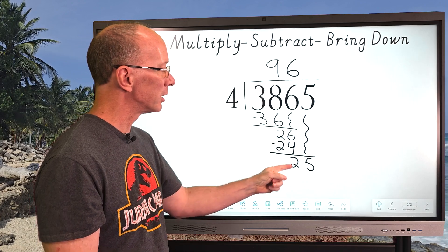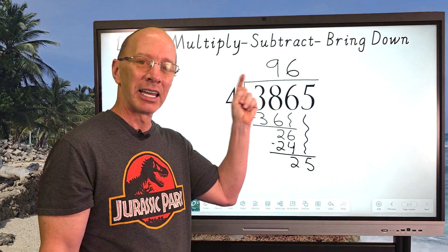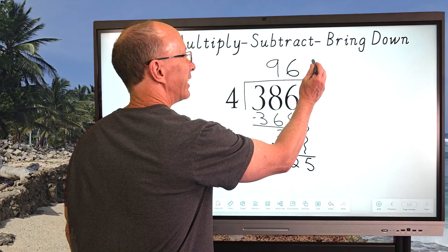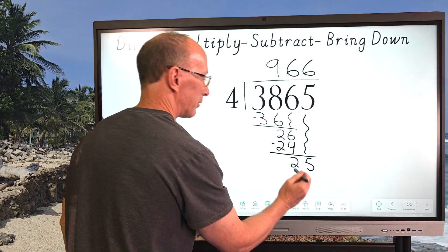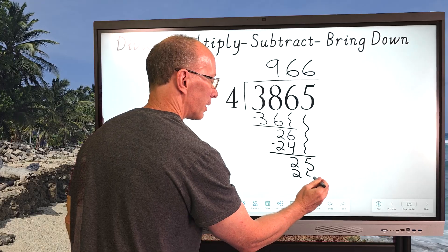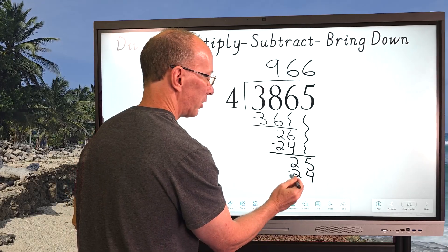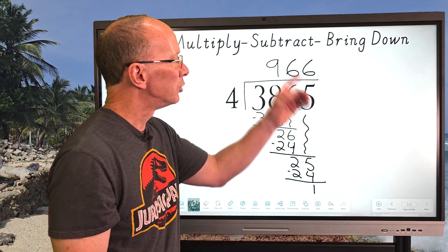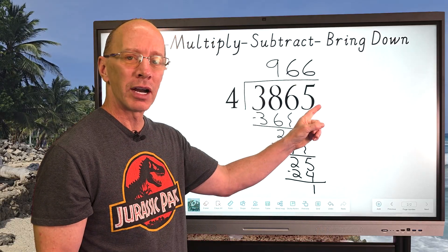Divide. How many times can I put four into 25? Again, I think it's going to be six. I know it's going to be six. So I'm going to put six right here. And then six times four is 24. Next step is to subtract. And we are left with a one.